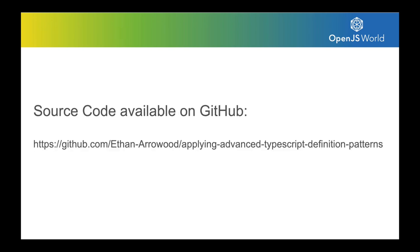We're going to do this through a code walkthrough, building these type patterns from scratch over a simplified implementation of Fastify. You can check out the source code on GitHub. I'll have a master branch with all of the completed code, as well as an initial branch with the starting point if you'd like to follow along.